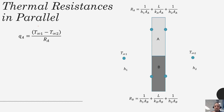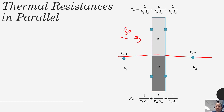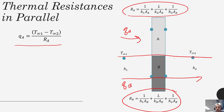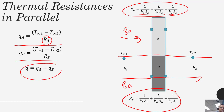Another way to approach this is to consider the two paths as two separate and independent systems. Calculate Q_A as (T_infinity_1 minus T_infinity_2) divided by R_A, where R_A includes all three thermal resistances in series. Do the same for Q_B, then calculate total heat flow by adding Q_A and Q_B together. This is a different mathematical expression but yields the same result.